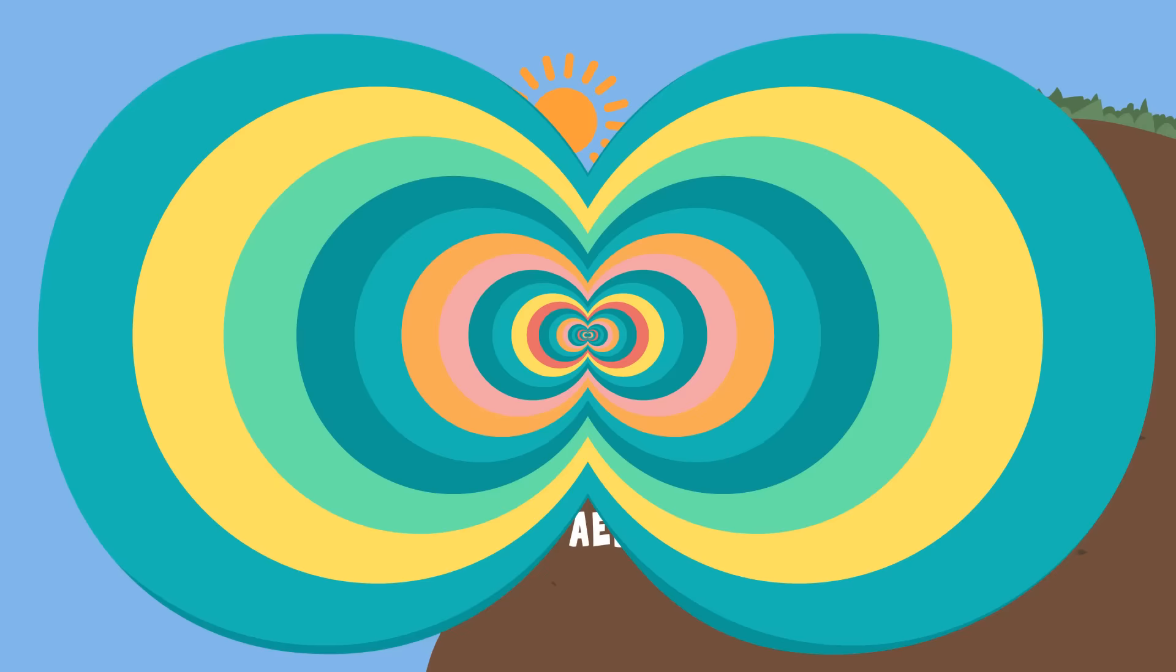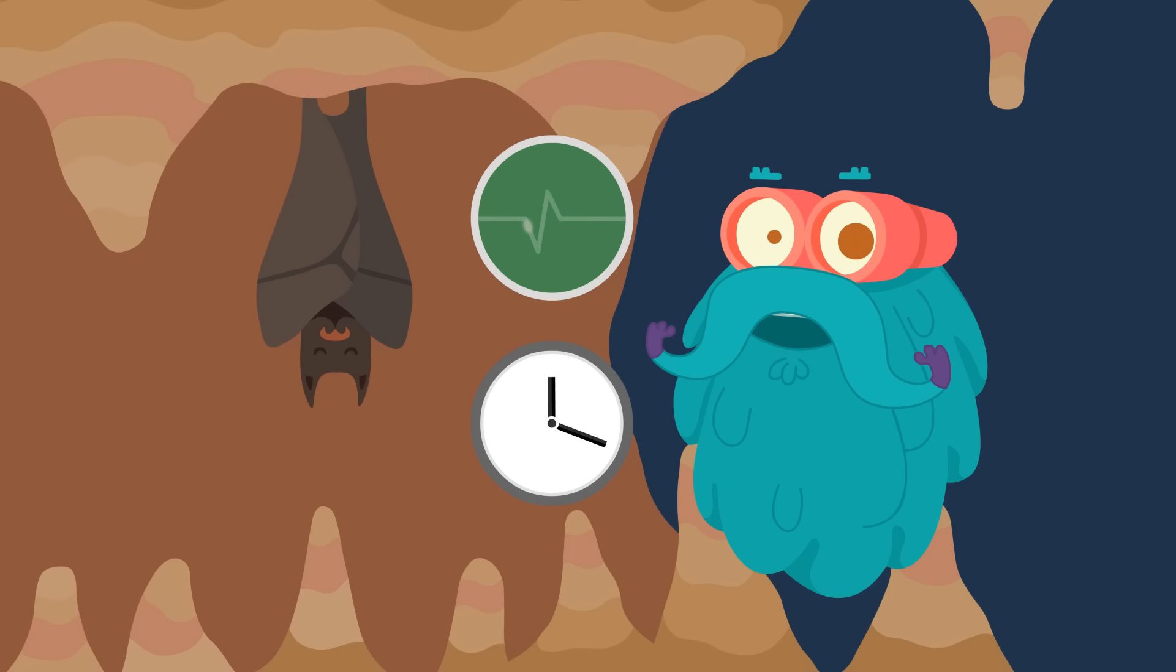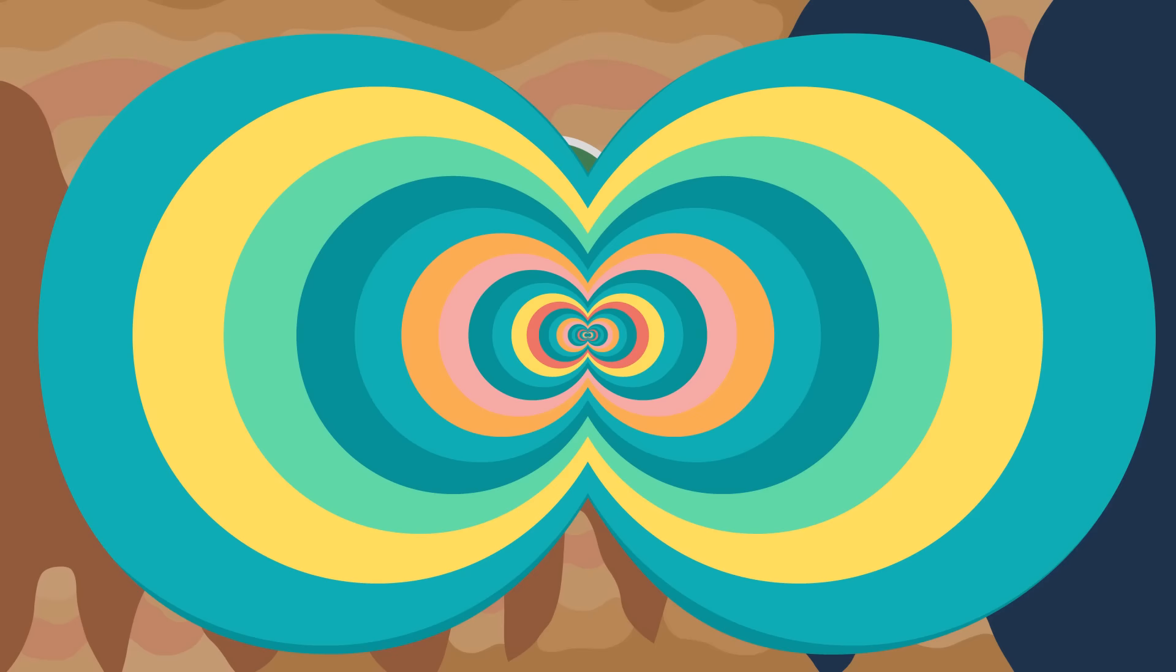When a bat hibernates, its heart rate decreases so much that it might not take a breath for up to an hour.